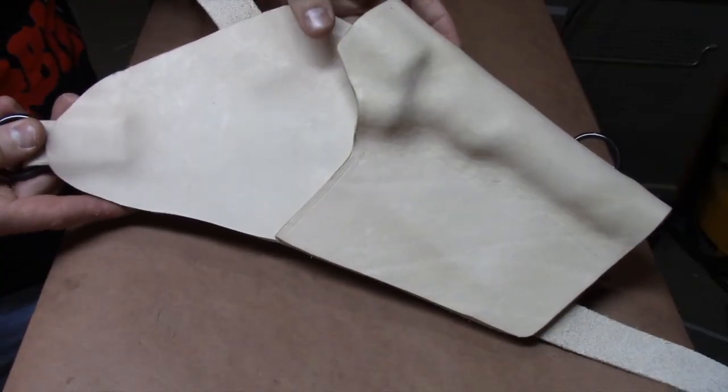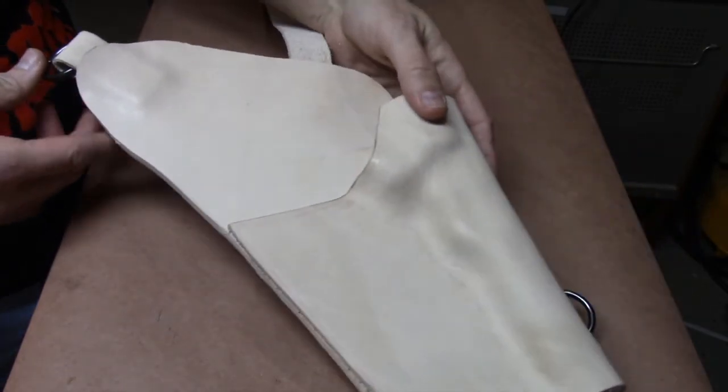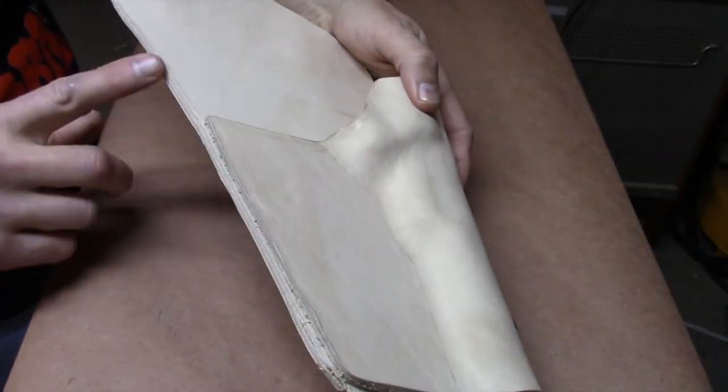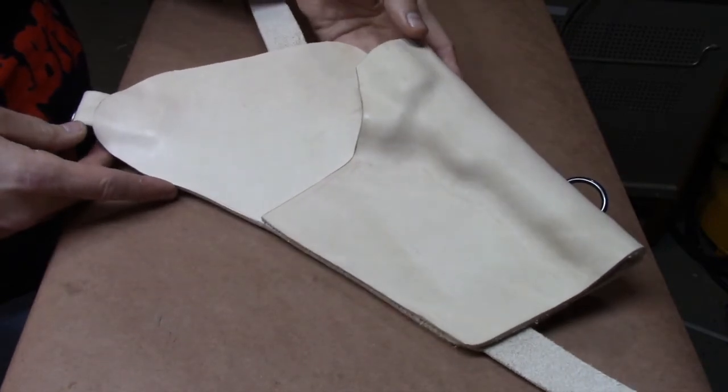And everything's trimmed off, so I've got a nice smooth line there all the way down the side. The shape is pretty much in place. I'll do some final sanding before I decide on the final shape.